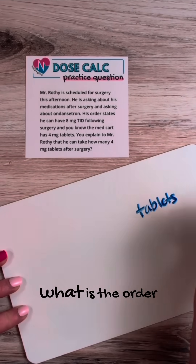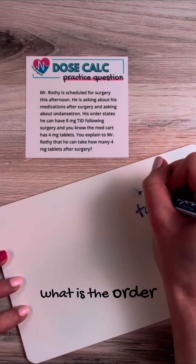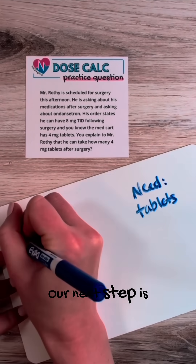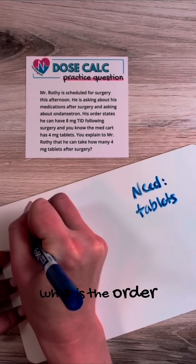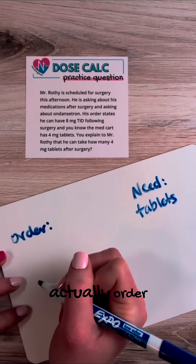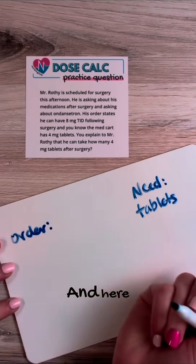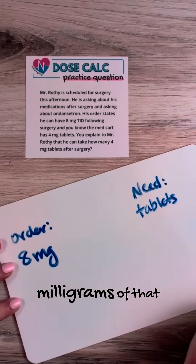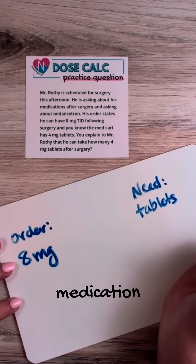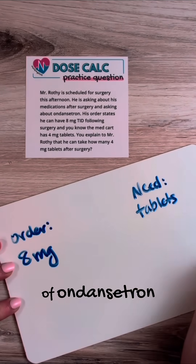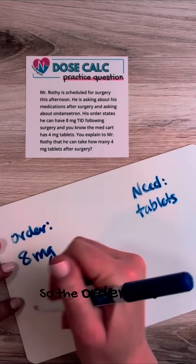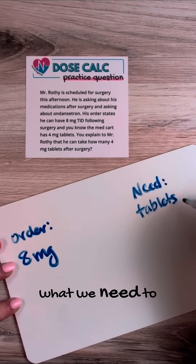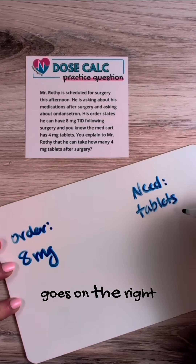Our next step is: what is the order? What did the doctor actually order? Here the doctor ordered eight milligrams of that medication, ondansetron. So the order goes on the left side, and the need — what we need to end up with — goes on the right.